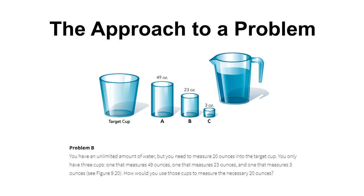Next we're faced with Problem B — the same kind of setup. We have an unlimited amount of water, and this time we need to measure 20 ounces into our target cup. We have a cup of 49 ounces, one of 23 ounces, and one of 3 ounces. We might say: last time we used the largest cup, so we add 49 ounces, subtract the second largest (23) to get 26 ounces, then subtract Cup C twice — 3 and 3 — to reach 20 ounces.